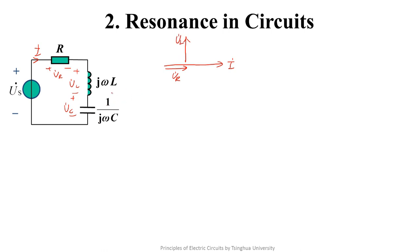If omega L equals 1 over omega C in the circuit, the phasor graph will be like this. So the voltage and current are in phase seen from the port.